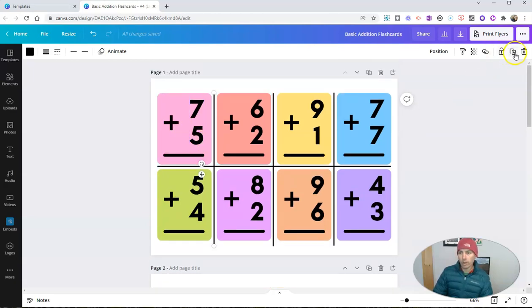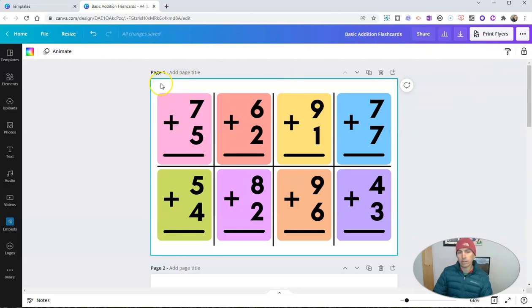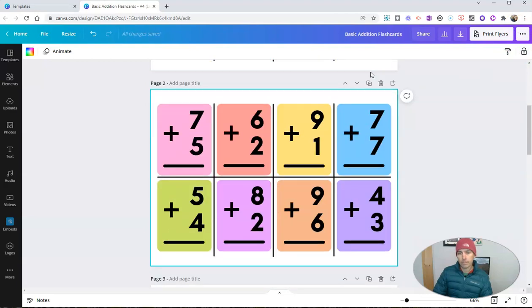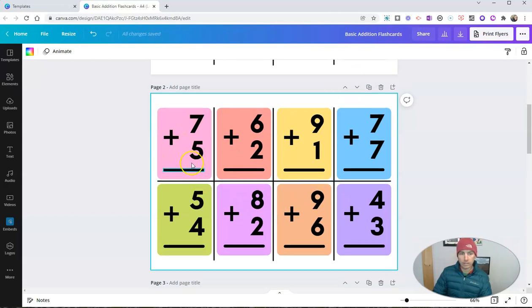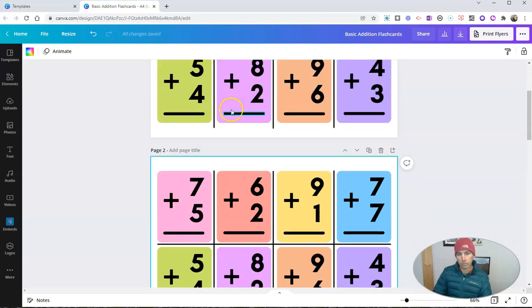So what I'm going to do is I'm going to duplicate the entire page. Let's make sure I've selected the entire page here. And I want to duplicate it. And now I have the same cutting lines, the exact same thing that I had right above here.